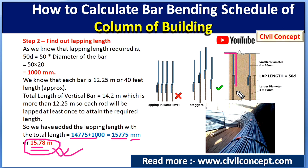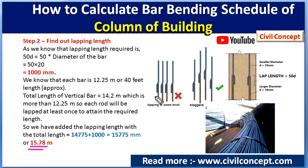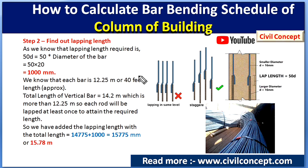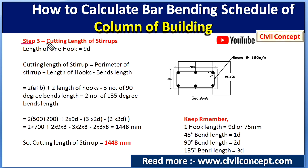An important note on lapping: while lapping rebar in a column, we should not provide all laps at the same level. Laps must be staggered in a zigzag form — one lap here, another at a different height, and so on. Also, lapping should not be provided at the very bottom or top of the column; it should be placed at the mid-section of the column for better structural safety.